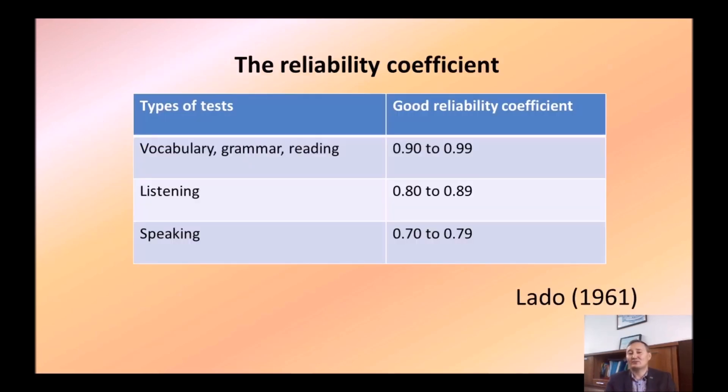Now, let's have a look at the reliability coefficients described by Lado. Lado states that a good speaking test should have a reliability coefficient no less than 0.70. Listening test, 0.80. Vocabulary, grammar, and reading, 0.90. Now, I have a question. Why does a speaking test have the lowest reliability coefficient in comparison with listening, vocabulary, grammar, and reading tests?